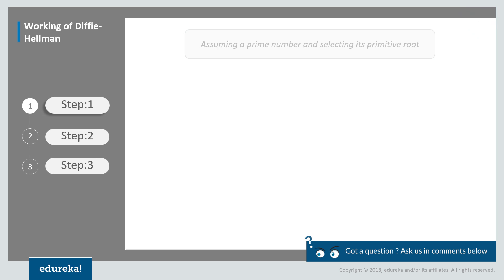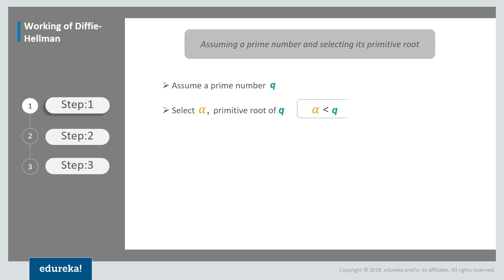The simplest and the original implementation of the protocol uses multiplicative groups of integers called modular. The foremost step is to assume a prime number, so let's call it Q. Now after assuming a prime number, we have to select Alpha such that Alpha must be the primitive root of the chosen prime number and Alpha should always be less than Q. So two conditions has to be satisfied. Now what exactly does it mean to be a primitive root and how do we exactly find this?